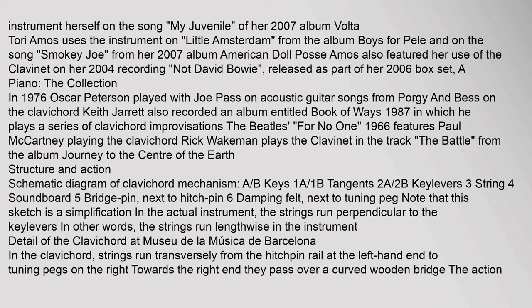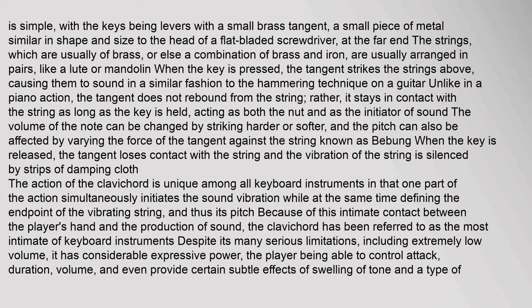In the clavichord, strings run transversely from the hitchpin rail at the left-hand end to tuning pegs on the right; towards the right end they pass over a curved wooden bridge. The action is simple, with the keys being levers with a small brass tangent — a small piece of metal similar in shape and size to the head of a flat-bladed screwdriver — at the far end. The strings, usually of brass or a combination of brass and iron, are usually arranged in pairs, like a lute or mandolin. When the key is pressed, the tangent strikes the strings above, causing them to sound in a similar fashion to the hammering technique on a guitar. Unlike in a piano action, the tangent does not rebound from the string; rather, it stays in contact with the string as long as the key is held, acting as both the nut and as the initiator of sound. The volume of the note can be changed by striking harder or softer, and the pitch can also be affected by varying the force of the tangent against the string, known as bibung.